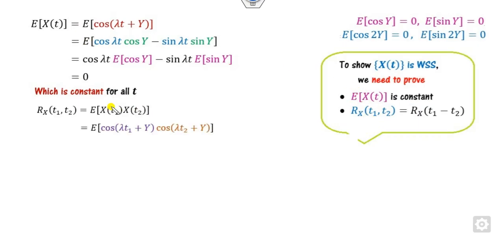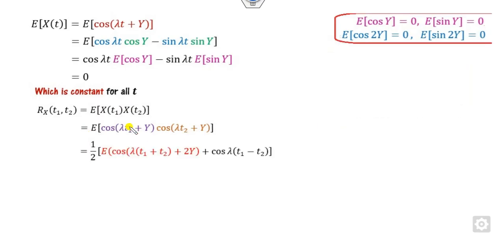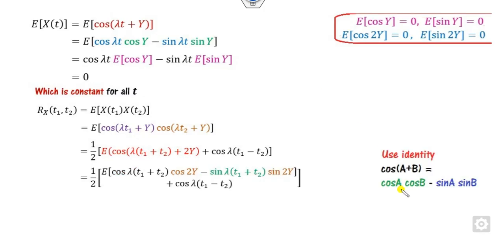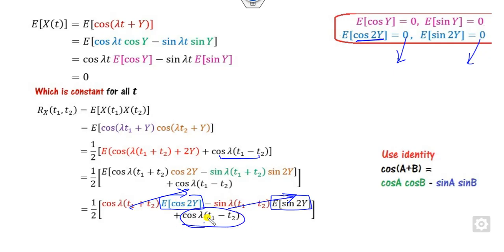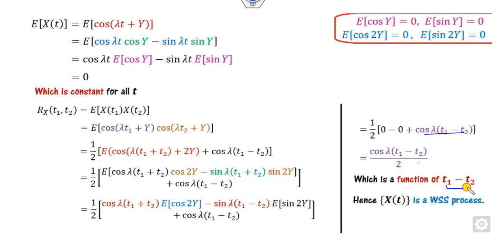For the second condition, starting from the definition of autocorrelation, substitute the values and multiply and divide by 2. Applying the identity cos(A+B) = cos(A)cos(B) - sin(A)sin(B), take the expected value. The terms E[cos(2A)] and E[sin(2A)] both equal zero. The remaining term is cos(t1 - t2), which is a function of t1 - t2. Hence the process is weak sense stationary.